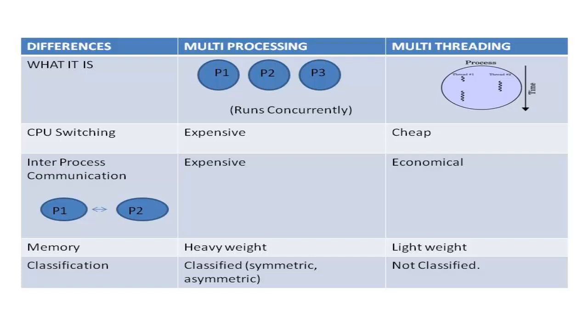Inter-process communication is expensive in multi-processing because they run in different address spaces. Inter-process communication is cheap in multi-threading because they run in the same address space.